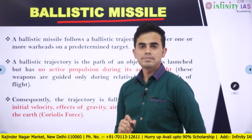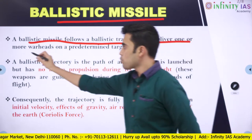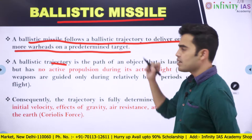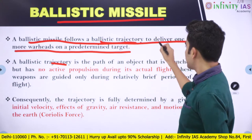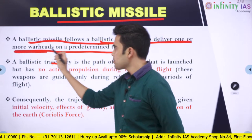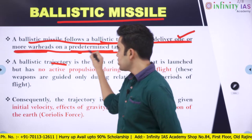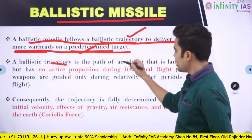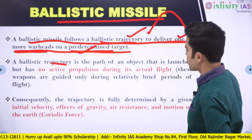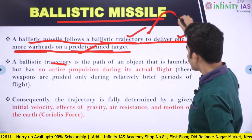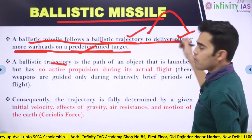What is a ballistic missile? A ballistic missile follows a ballistic trajectory to deliver one or more warheads on a predetermined target. The important points here are: it follows a ballistic trajectory, it can deliver one or more warheads, and it targets a predetermined target. A ballistic trajectory is when a missile is fired — it goes up into the atmosphere and falls down. One or more warheads means it can carry more than one warhead.